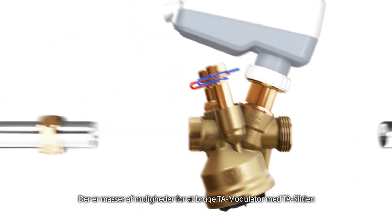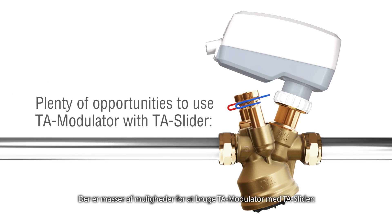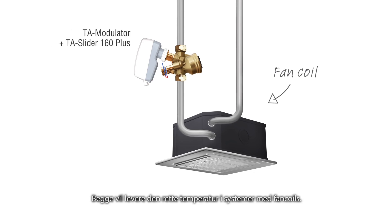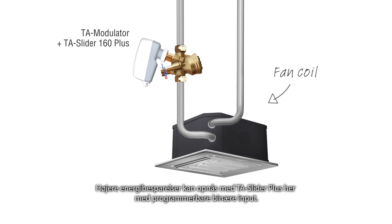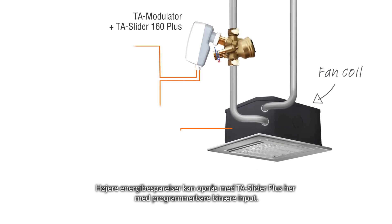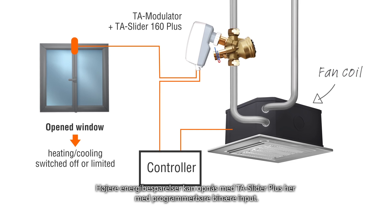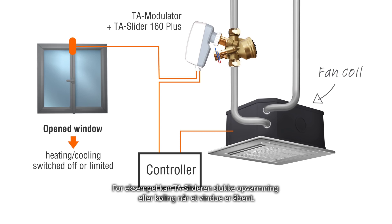There are plenty of opportunities to use TA modulator with TA slider. Both will deliver perfect temperature comfort in systems with fan coils. Higher energy savings can be achieved with TA slider plus, with programmable binary input. For example, TA slider can switch off heating or cooling when the window is open.